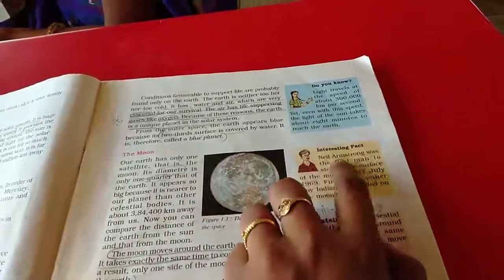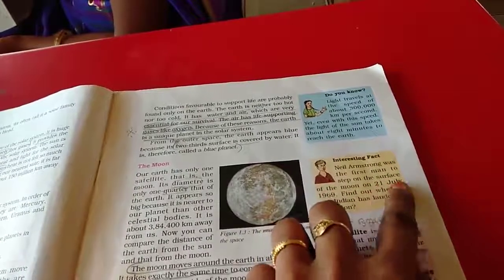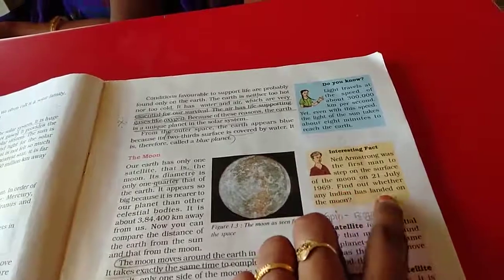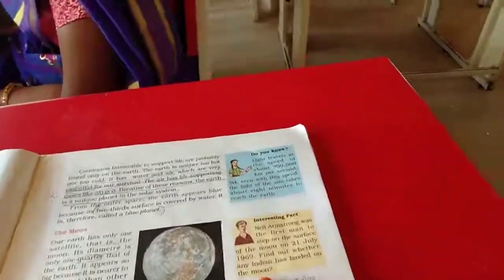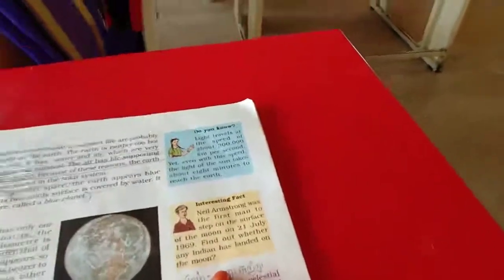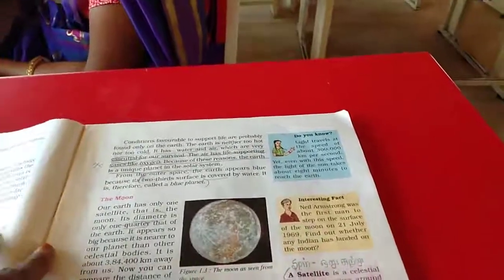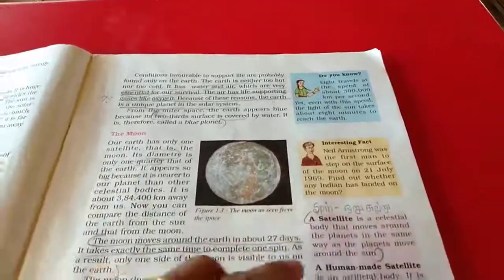Interesting fact. Neil Armstrong was the first man to step on the surface of the moon on 21st July 1969. Find out whether any Indian has landed on the moon. Yeah, Rakesh Sharma also landed on the moon. Kalpana Chawla also. She has exploded some of the Sunita Williams too. She has did some experiments on the moon only.